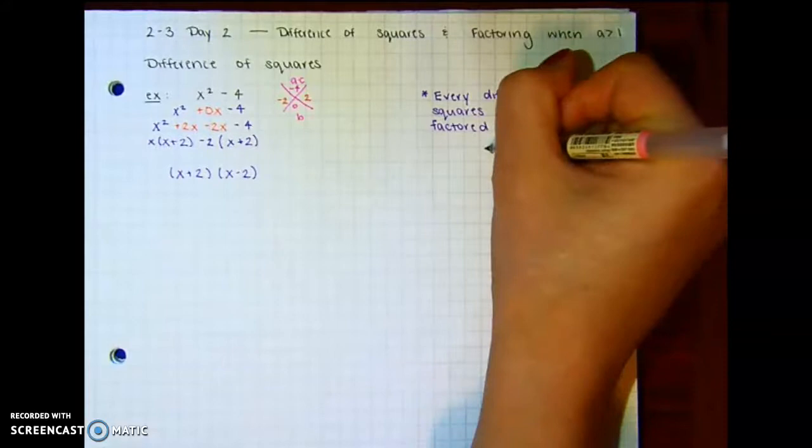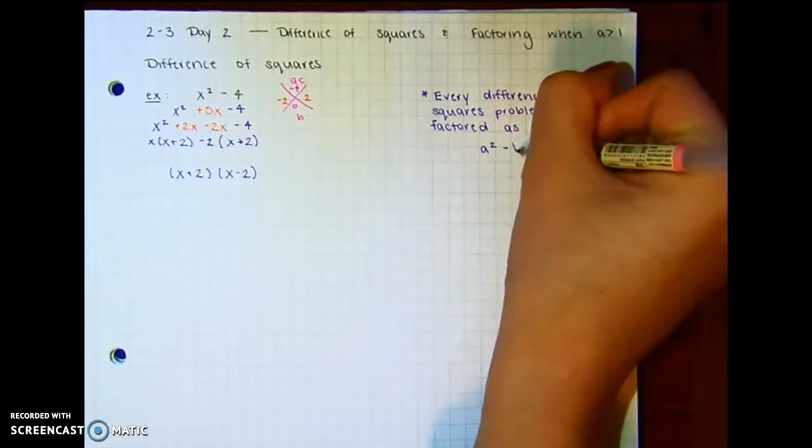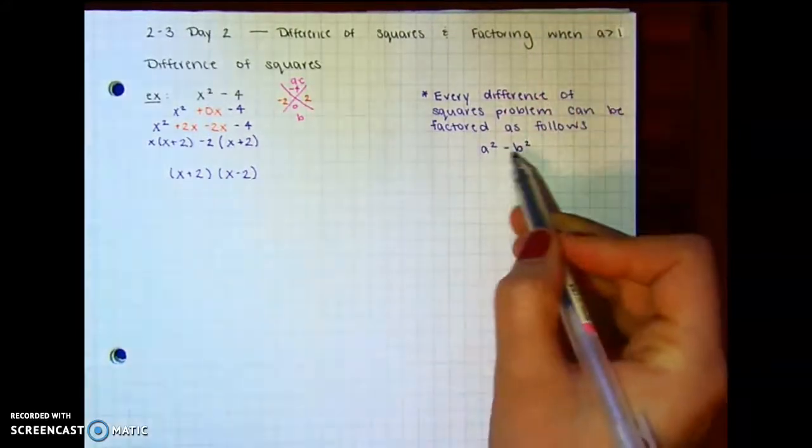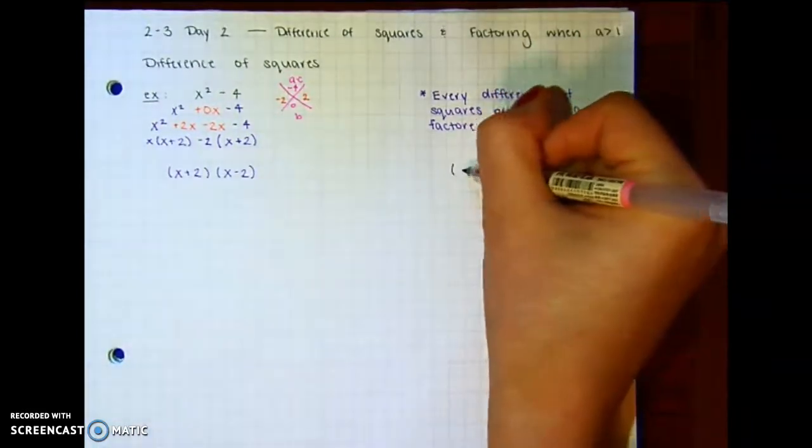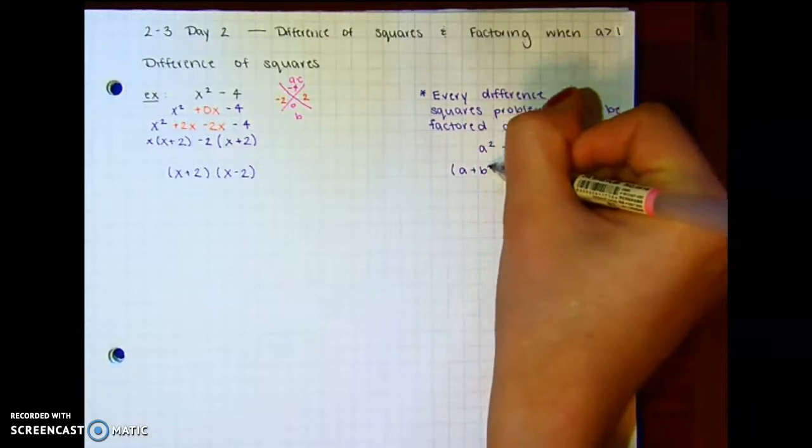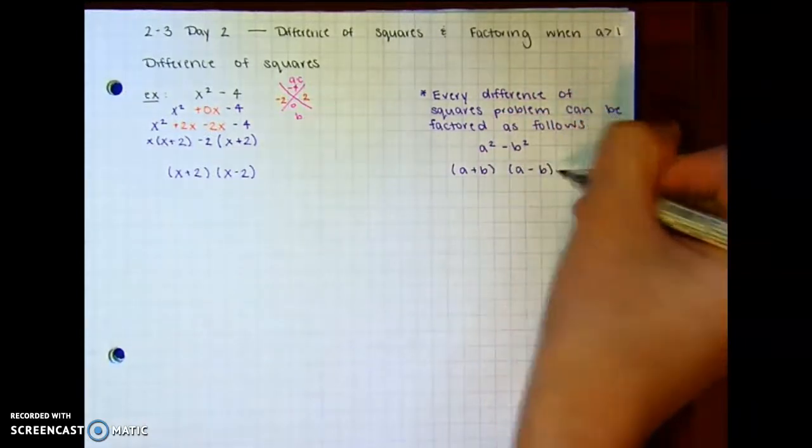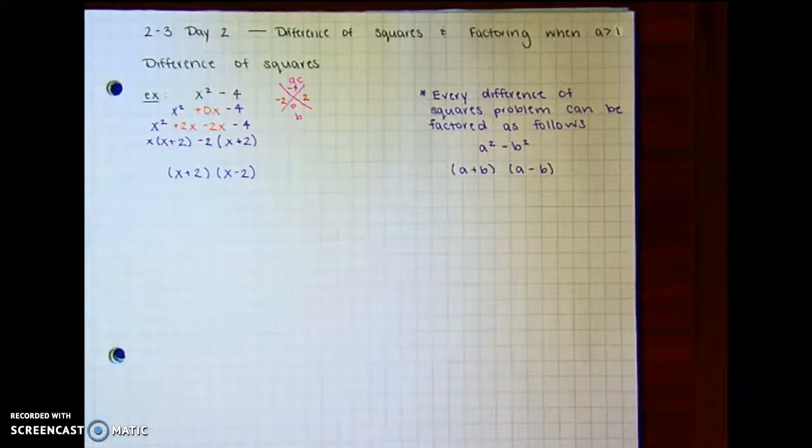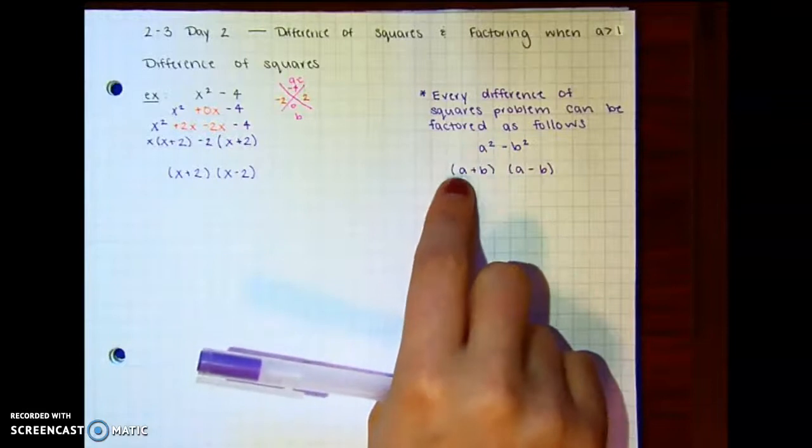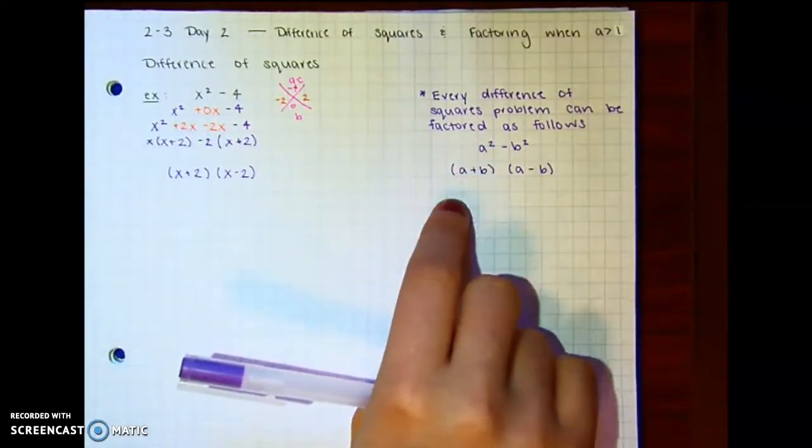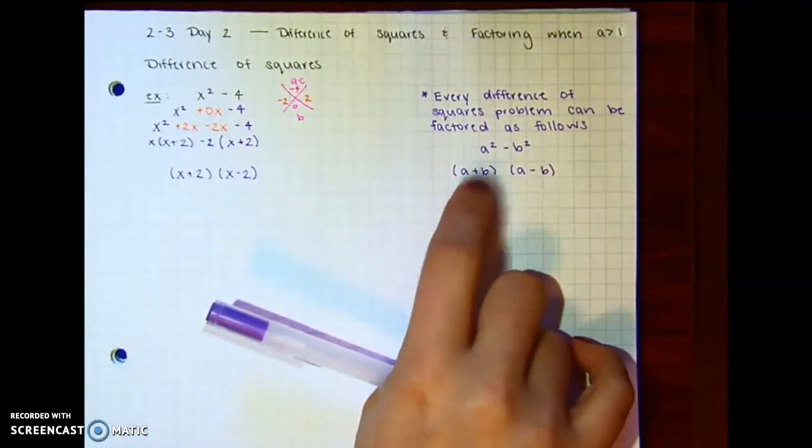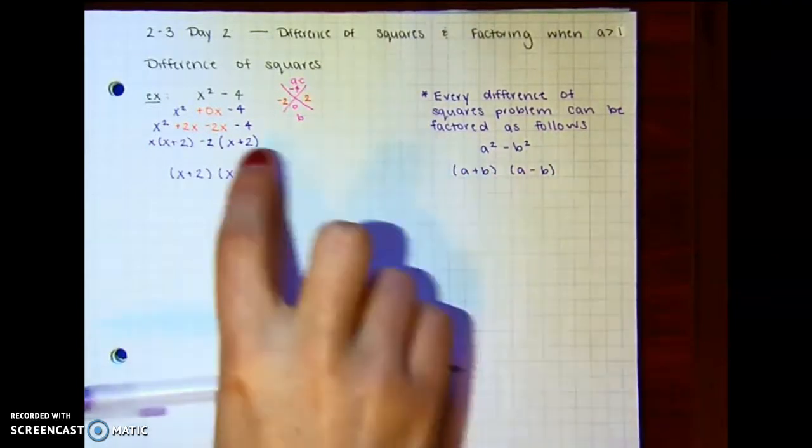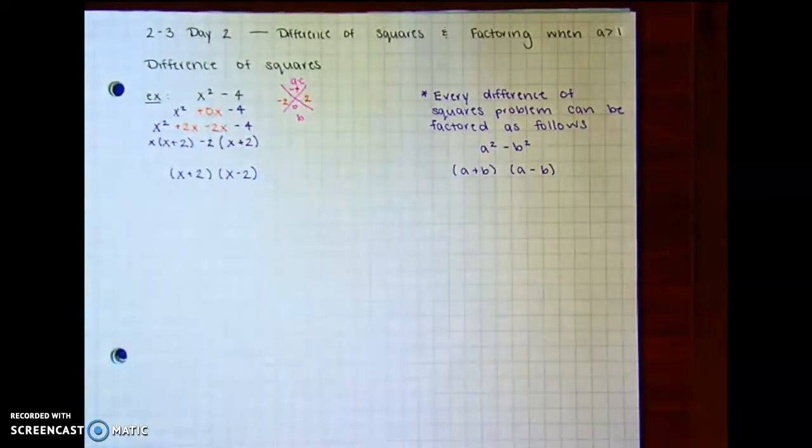So if you have a squared minus b squared, these are both perfect squares, it's going to factor to be a plus b times a minus b. So basically, you just need to determine what times itself equals this perfect square. You could think about it as the square root of a squared and the square root of b squared. And one's going to be positive and one's going to be negative, because that middle value needs to be zero.